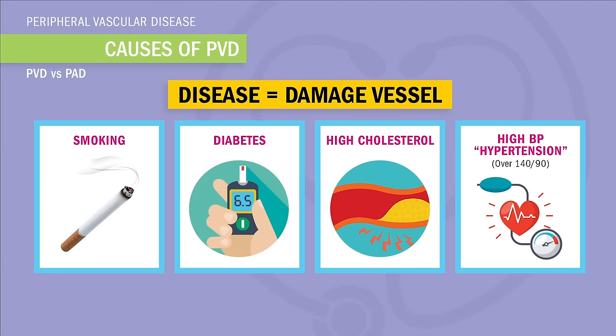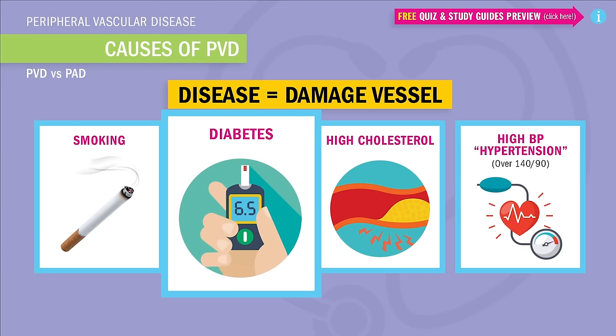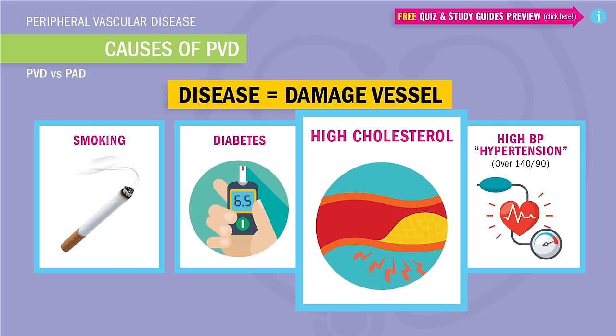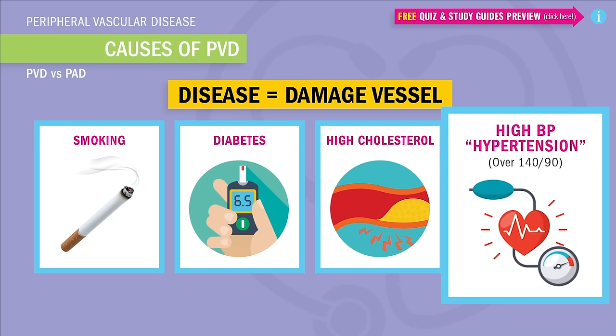Now the causes of vascular disease are anything that damages vessels — like smoking, which scars the lining of the blood vessels; uncontrolled diabetes, where the blood is turned into mud with all that sugar, tearing and stretching those blood vessels apart; and even high cholesterol over 200, where cholesterol sticks to the vessel walls making them stiff and hard. And lastly, even years of chronic high blood pressure — called hypertension, over 140 over 90 — adds so much stress and pressure, eventually stretching those blood vessels out and causing small tears in the vessels themselves.